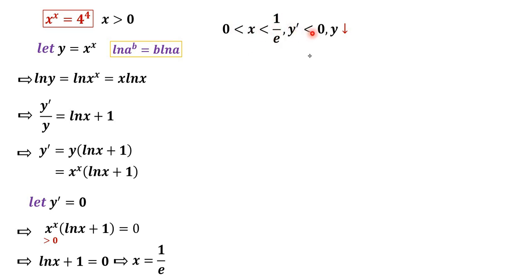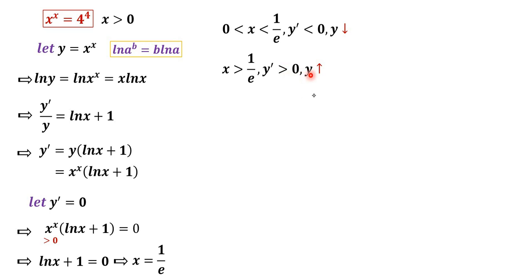For 0 < x < 1/e, y' is negative so the function y decreases in this range. For x > 1/e, y' is positive so y increases in this range. This gives us a clear idea of how the graph of y = x^x looks.